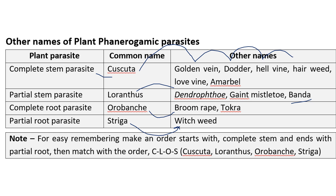A previously published video on phanerogamic plant parasites is recommended before watching this one. For easy remembering, use the order CLOS: Cuscuta, Loranthus, Orobanche, Striga — starting with complete stem, partial stem, complete root, and partial root respectively. Match CLOS with the parasite type order for correct answers.